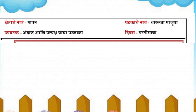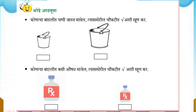Now let's do Math. Let's measure capacity. 'Dharakta' means capacity. The amount that a container can hold is called its capacity. Which vessel holds the most water? Look at the pictures and tell me.